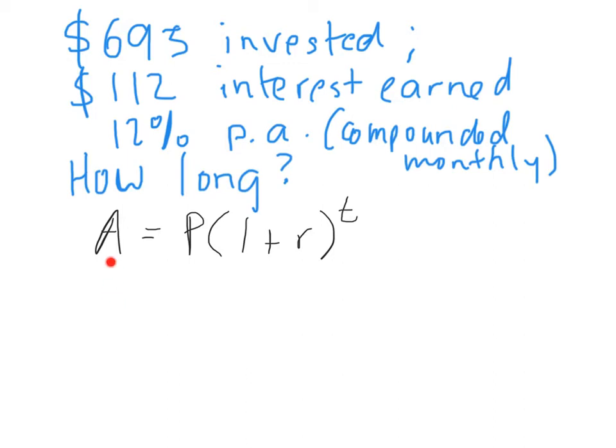Is it A, or P, or R, or T? It is P. It's the principle. It's the initial amount. So, $695 was invested, so that's the initial amount. That's the principle.